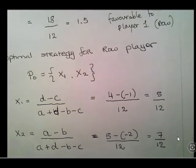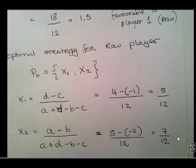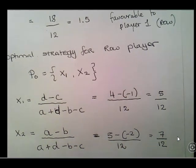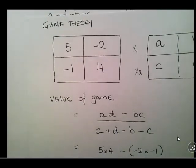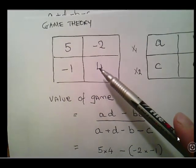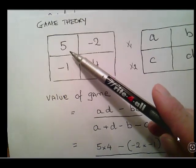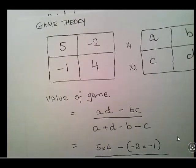Working it out: D is 4 and C is minus 1, so D minus C is 4 minus minus 1, giving 5 over 12 for X1. For X2, A minus B is 5 minus minus 2, which is 7 over 12. So to figure out how often to play the top row, we look at the bottom row — 4 minus minus 1 is 5. And how often to play the bottom row, we look at the top row — 5 minus minus 2 is 7. So X1 equals 5/12 and X2 equals 7/12.